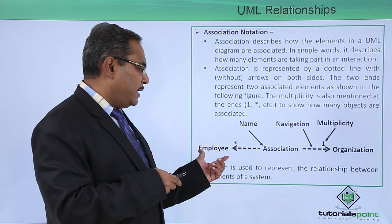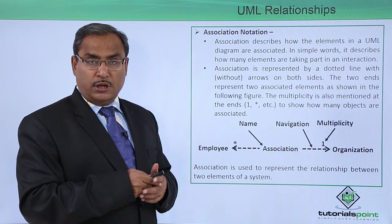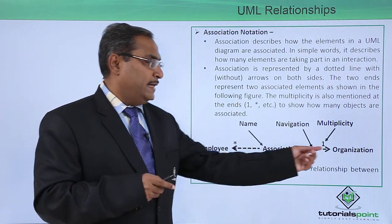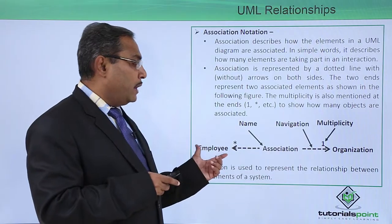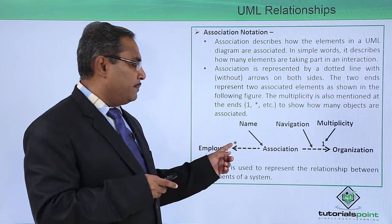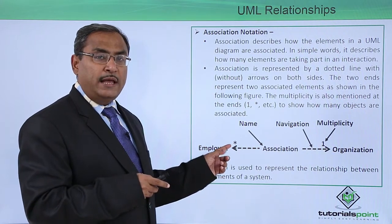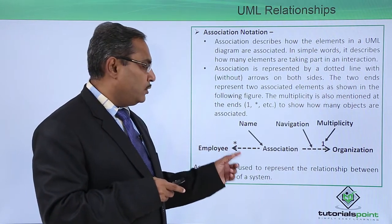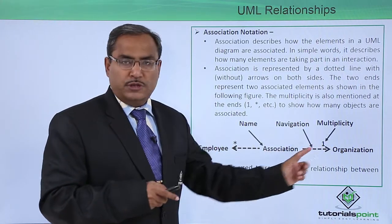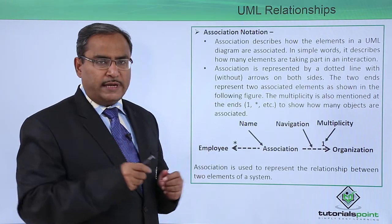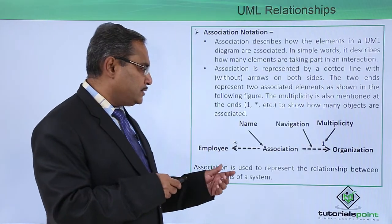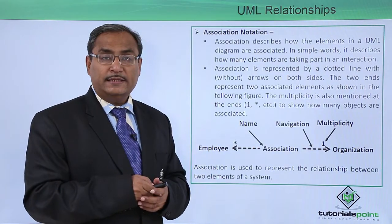Consider this example: here we have Employee and here we have Organization. Employee and Organization are associated. Against one organization there are multiple employees working, so the multiplicity is one on the organization side and many on the employee side, denoted using the asterisk symbol. The association name can also be provided, and bidirectional dotted line with both-side arrows is used.